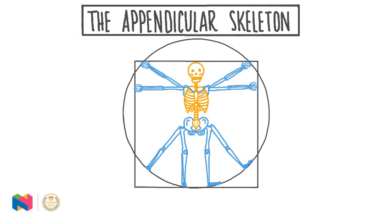In this video, we will learn to name and identify the bones of the upper and lower appendages. We will learn about the types of joints found in the appendicular skeleton, and we will learn about the structures within these joints.